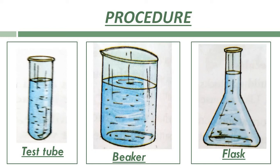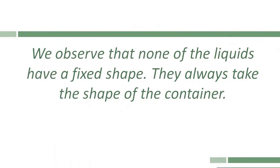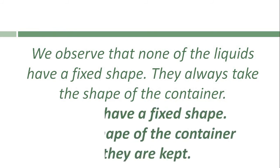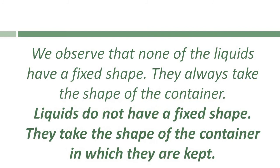Repeat this process with other liquids like milk and juice and observe the shapes in each case. Children, you will observe that none of the liquids — whether water, milk, or juice — have a fixed shape. They always take the shape of the container. So the conclusion of this activity is: liquids do not have a fixed shape; they take the shape of the container in which they are kept.